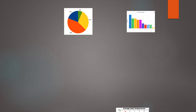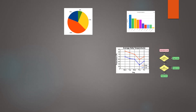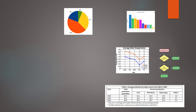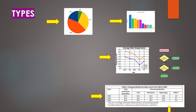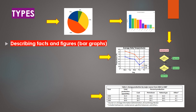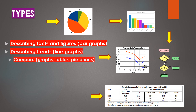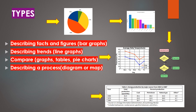Now let's take a look at the types of graphs. We can get any graph like a pie chart, bar graph, table, flow chart, and we need to do combination charts as well. If you want to describe facts and figures, take help of bar graphs. Describe trends through line graphs, comparison tables and pie charts. Describe process diagram or map, and describe a flow chart.